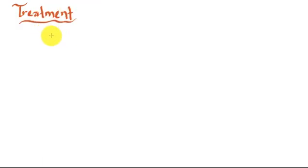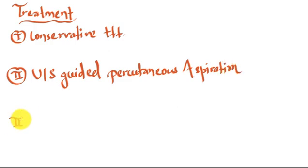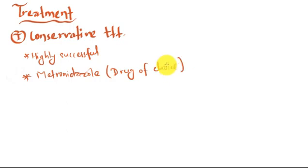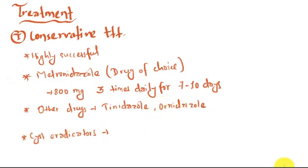Talking about the treatment, we have three modalities: conservative treatment, ultrasound guided percutaneous drainage, percutaneous aspiration, and open drainage. Conservative treatment is highly successful. Metronidazole is the drug of choice. 800mg three times daily for seven to ten days will do the job. Other drugs used are tinidazole, ornidazole, and for cyst eradication we can use diloxanide furoate.